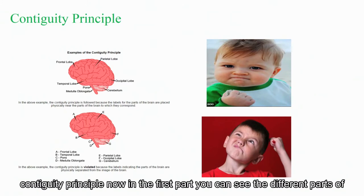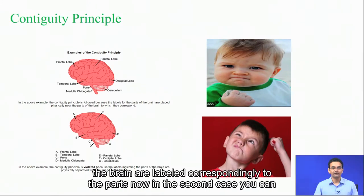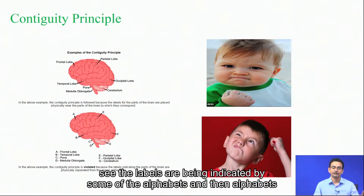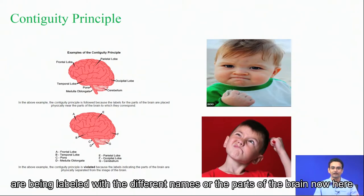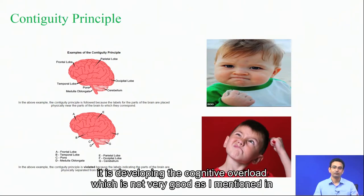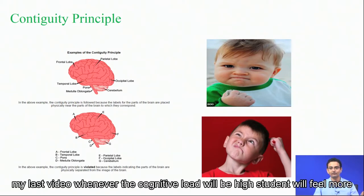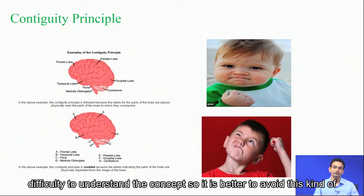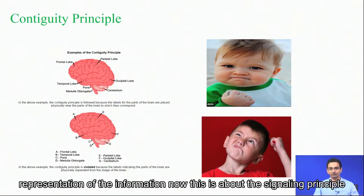This is about the contiguity principle. In the first part you can see the different parts of the brain are labeled correspondingly to the parts. In the second case the labels are indicated by alphabets, and those alphabets are then matched with the different names or parts of the brain. This develops cognitive overload, which is not very good as I mentioned in my last video — whenever cognitive load is high, students will find it more difficult to understand the concept. So it is better to avoid this kind of representation of information.